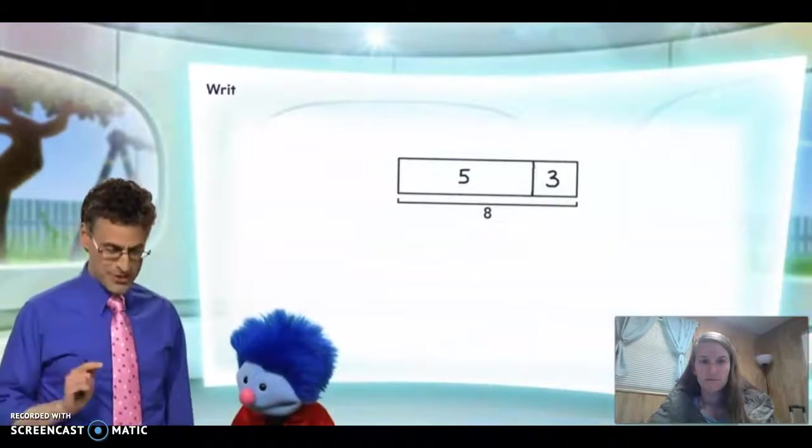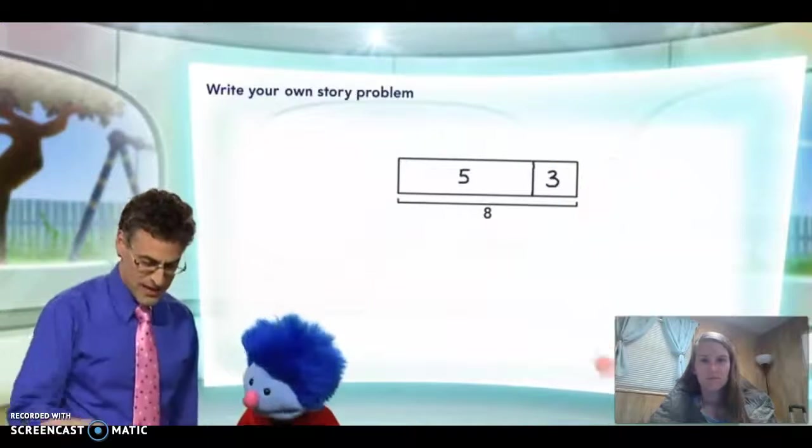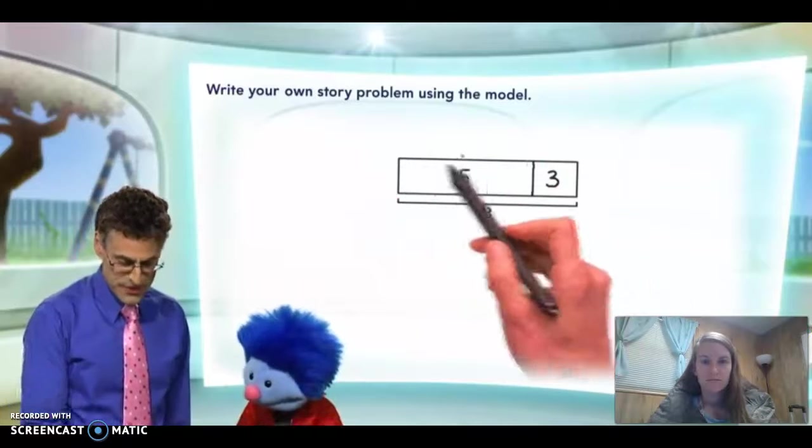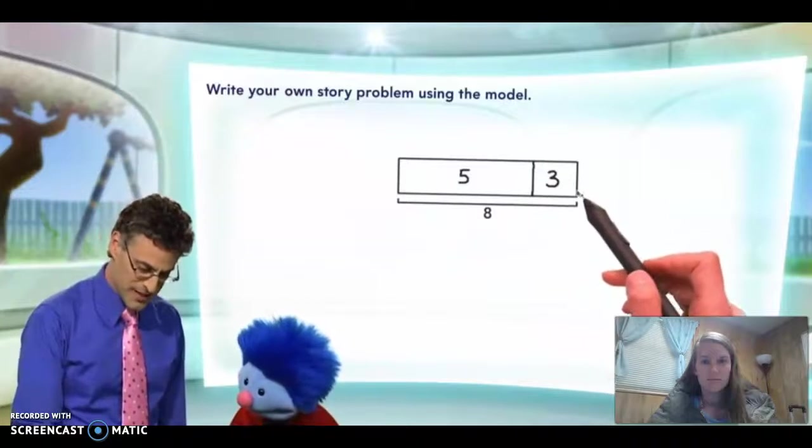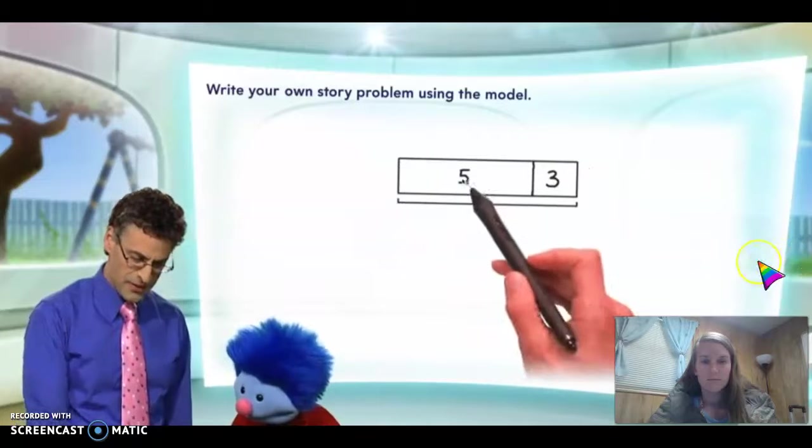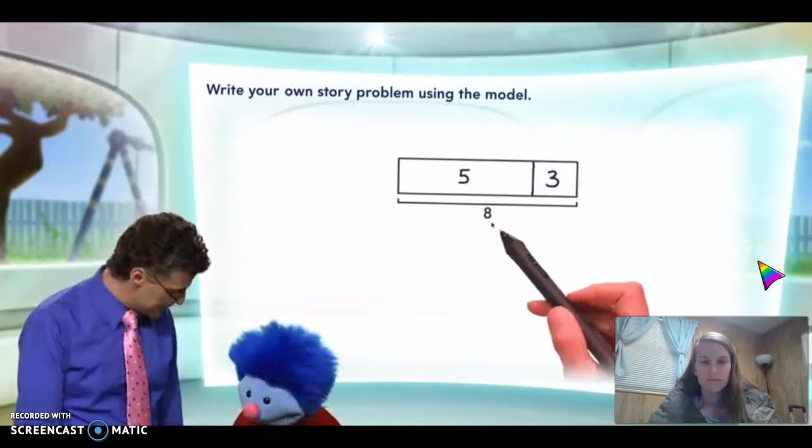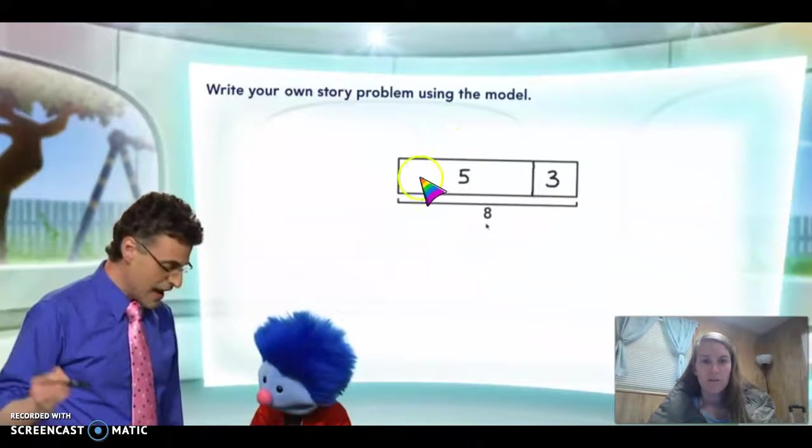Okay, so let's write our own story question using just this model. And so you can see in this model, we see that we have this shape right here giving us a 5, representing 5, and this little one representing 3, and all together, 5 and 3 together, we see 8. So remember, these are our two parts that we add or join together to make the whole. So 5 and 3 are the two parts that make 8.